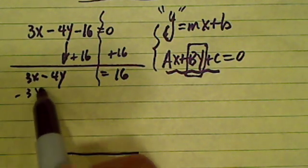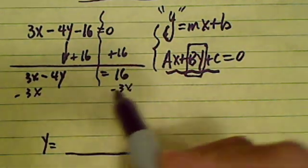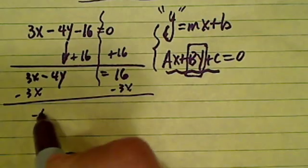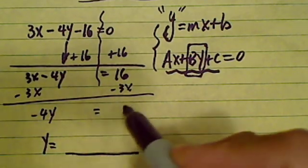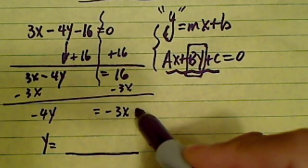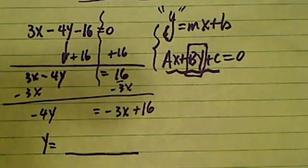Now let's move 3x over. I'm going to subtract 3x over. And I have minus 4y is equal to minus 3x plus 16. This is positive 16 here.